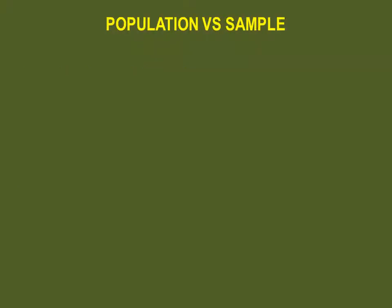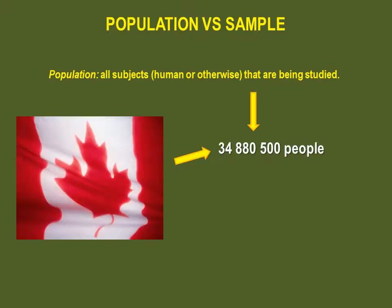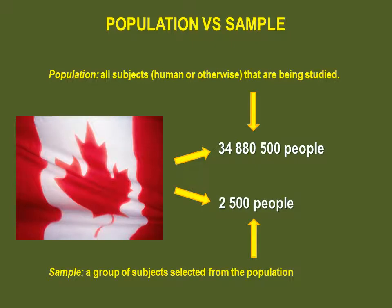One crucial distinction to make when doing inferential statistics is the difference between sample and population. A population consists of all subjects, humans or otherwise, that are being studied. For example, if you were to do a study on the population of Canada, you would have to take observations and measurements on almost 35 million people — that's not only huge, it's exceedingly time consuming, expensive, and an impossible task if you're not Statistics Canada. Instead, you would have to select a group of subjects from that population. That's your sample.